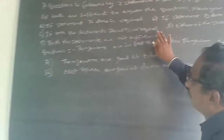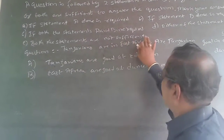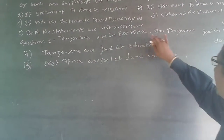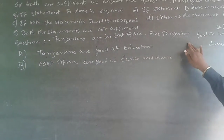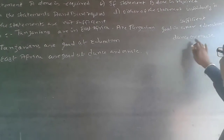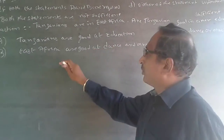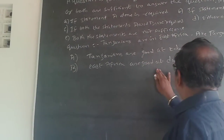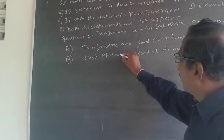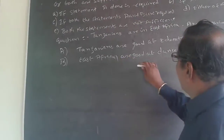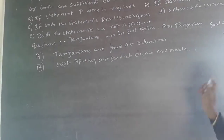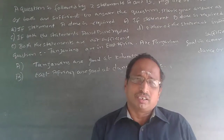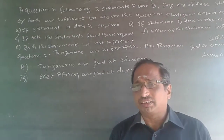E if both the statements are not sufficient. The question is: Tanzanians are in East Africa — are Tanzanians good in either education, dance, or music? Statement A says Tanzanians are good at education. Statement B says East Africans are good at dance and music. This is a logical reasoning question on data sufficiency.